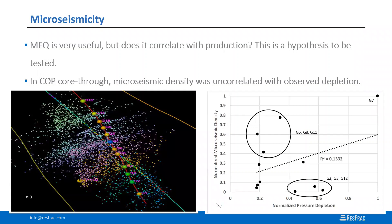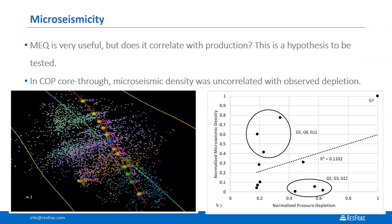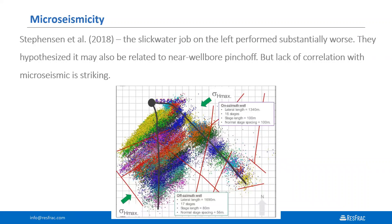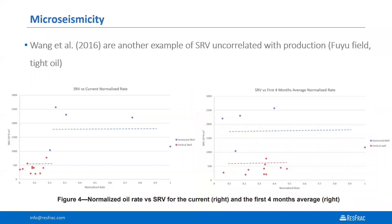I'll mention microseismicity. Microseismicity is very useful — a foundational part of how we build frac models — and critical for understanding frac geometry. However, it does not necessarily correlate to production; I think that's a hypothesis to be tested. In the ConocoPhillips core-through study, microseismic density was uncorrelated with the depletion observed at the offset well. Here's another published example where size of the SRV was found to be uncorrelated with production. And in a third example: which of two wells produces better? The one with the very large and dense microseismic cloud, or the one with the small, short microseismic cloud? It's actually the one with the small, short microseismic cloud. We just have to understand that these are hypotheses to be tested.